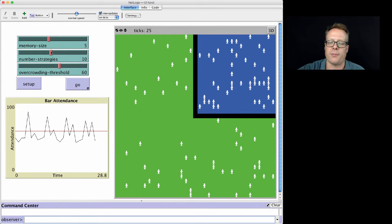These are algorithmically generated from that series of weights. And you have an overcrowding threshold. The traditional value for this is 60. That was what Brian Arthur originally proposed, but you can set it up however you want.